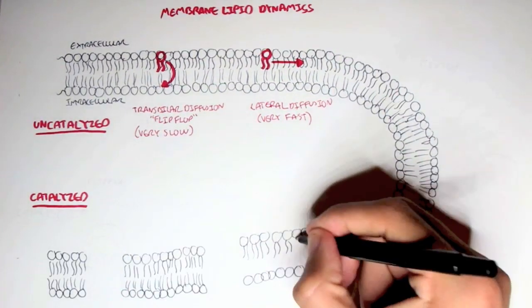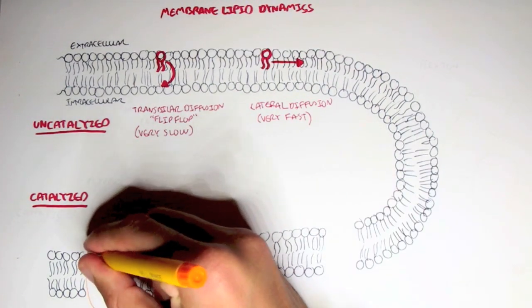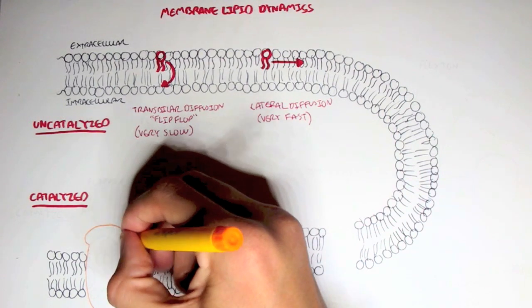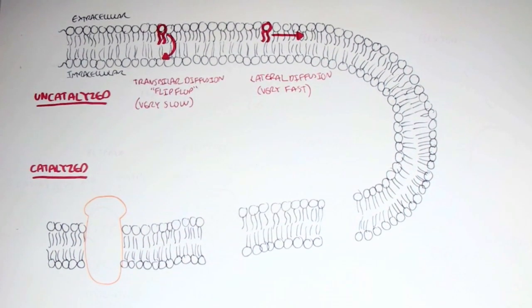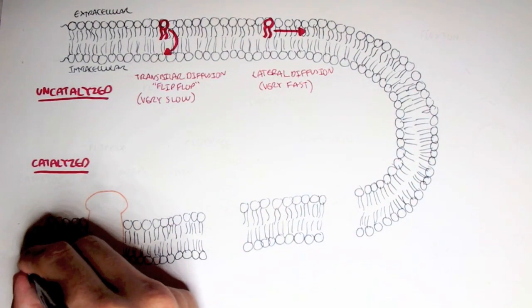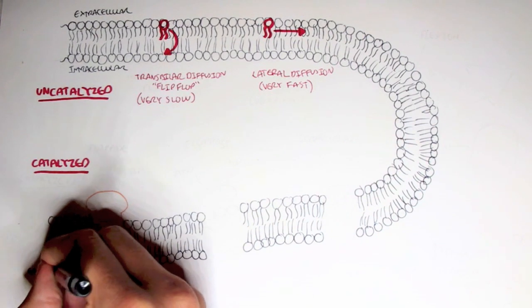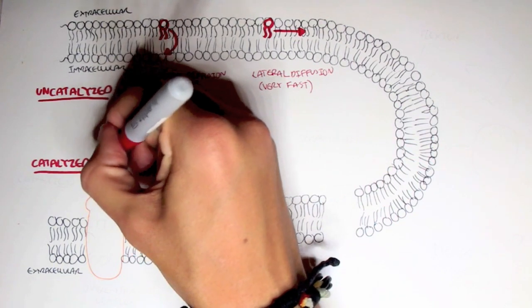Now let's look at the catalyzed membrane lipid dynamics, which uses proteins, enzymes to move lipids from one layer to the other, which will obviously lower the activation energy. So this process will be faster than the trans bilayer diffusion process which is very slow. So for example, if we have the extracellular fluid here.